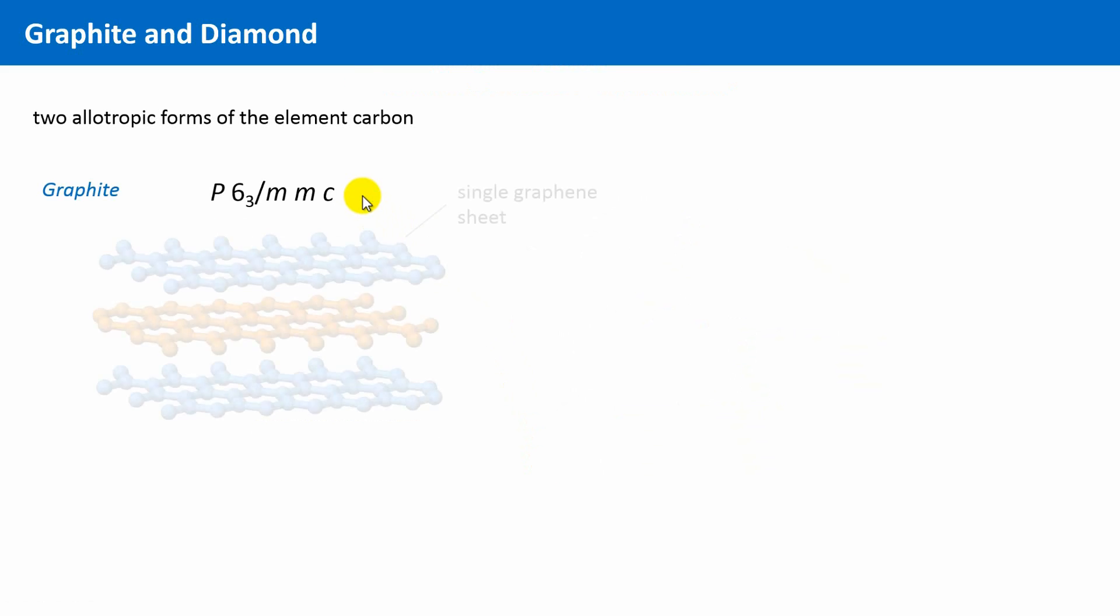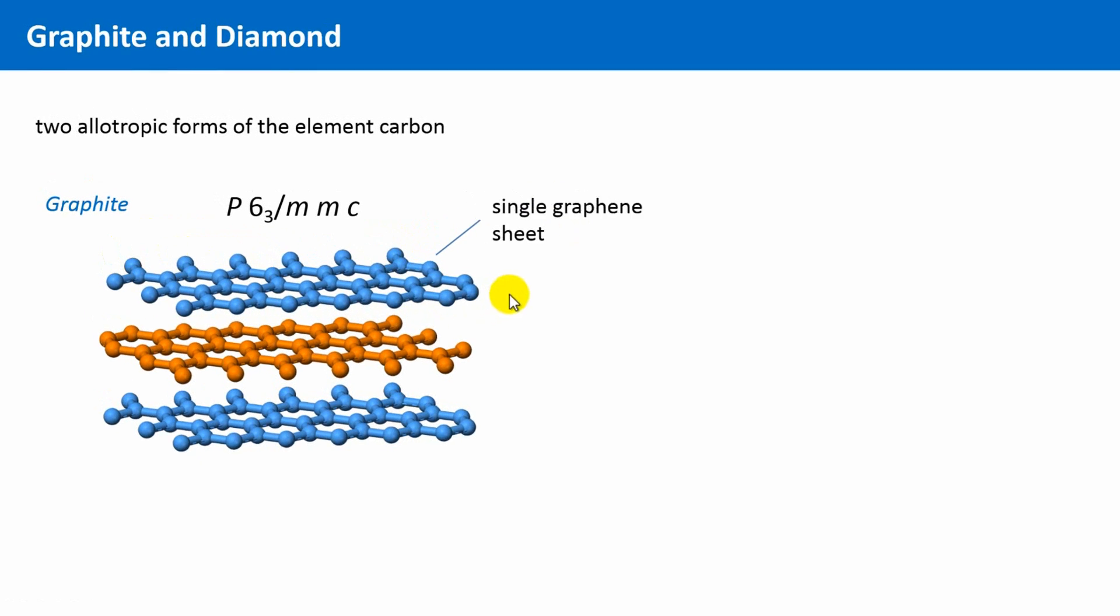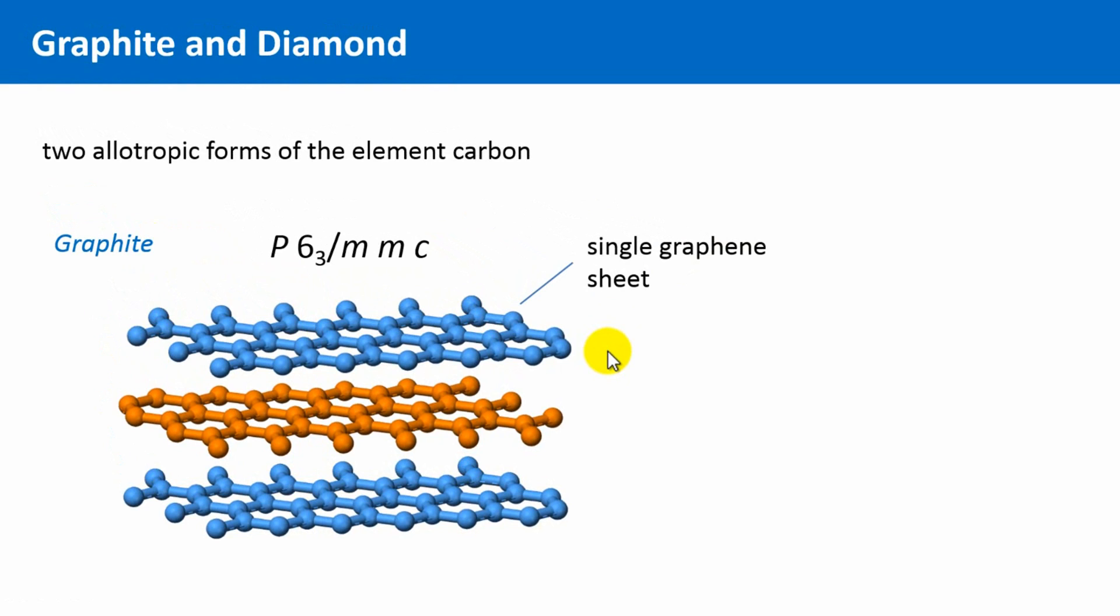It is composed of these single, planar, so-called graphene sheets, having this nice honeycomb structure. Within such a single sheet all carbon atoms are chemically bonded to three other atoms in a triangular fashion.